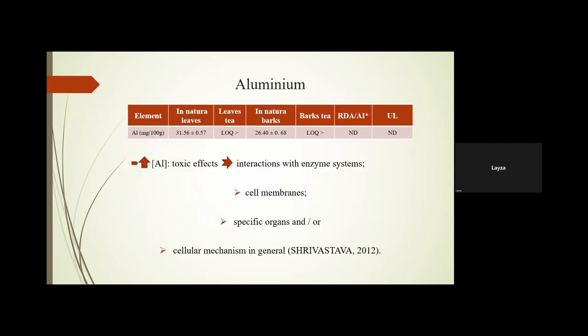Aluminum is more commonly known as a toxic element and was only found in in natura barks and leaves. We did not have any established recommendation to compare with, but it is known that high concentrations of aluminum are extremely toxic due to its interaction with enzyme systems, mainly in cell membranes, specific organs, and cellular mechanisms in general. So it is an element we have to be careful about, even when ingesting indirectly.